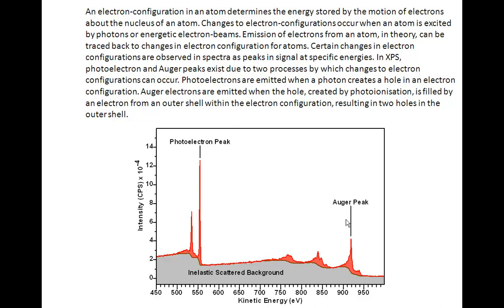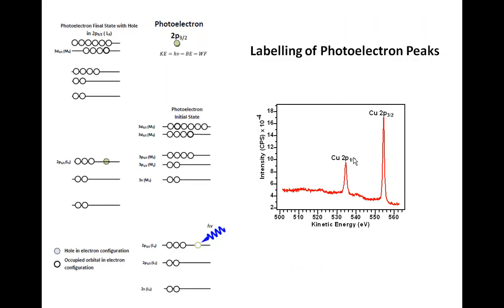To understand the Auger process, we must start by looking at the photoionization that results in a photoelectron peak. If we consider the photoionization of the copper 2p3/2, this is achieved by creating a hole by scattering an electron by a photon in the 2p3/2 subshell of the atom.